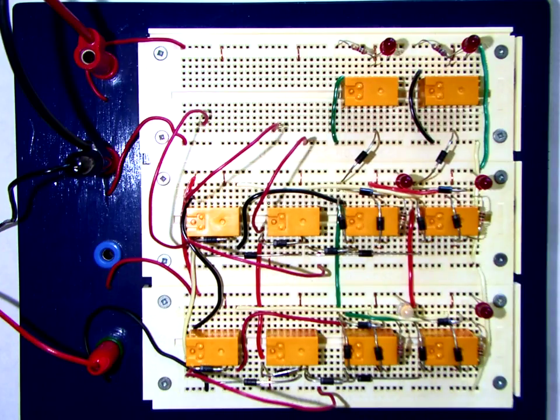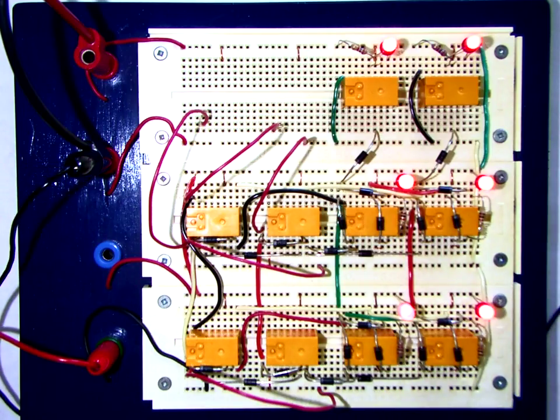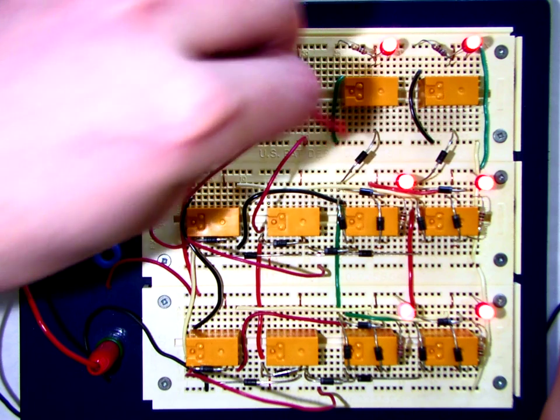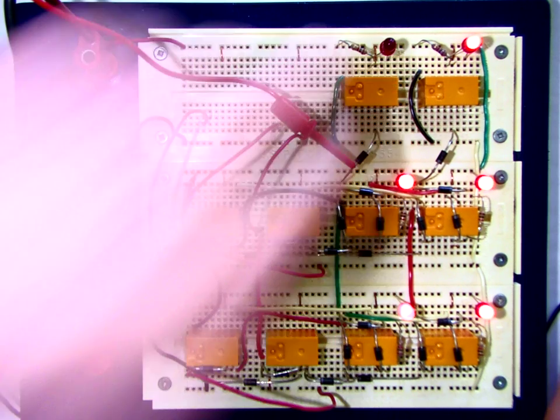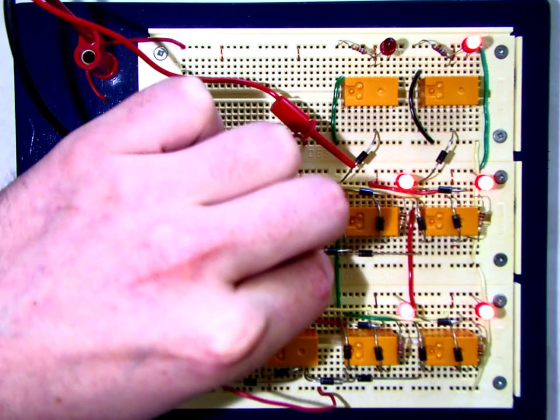We'll turn on our circuit. Initially, our data lines are floating with a one and a one, and all of our memory locations by default will float and just store ones. Now what we're going to do here is drive the data bus. We have two clips here and I'm just going to clip onto one data bus line, which is going to drive it low. So now we have a zero-one pattern.